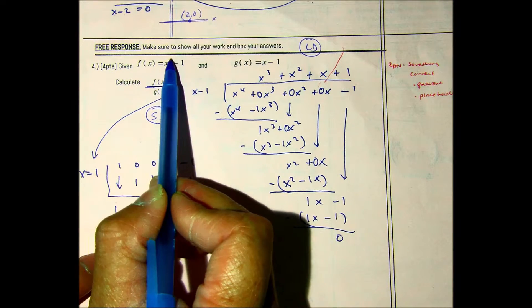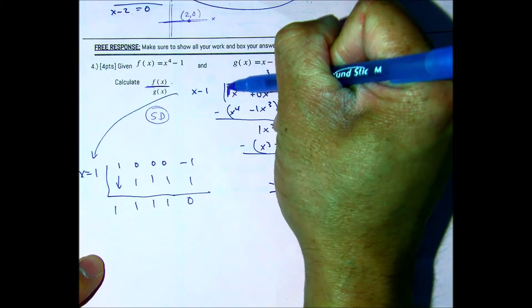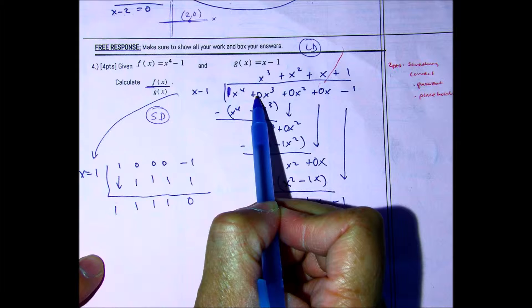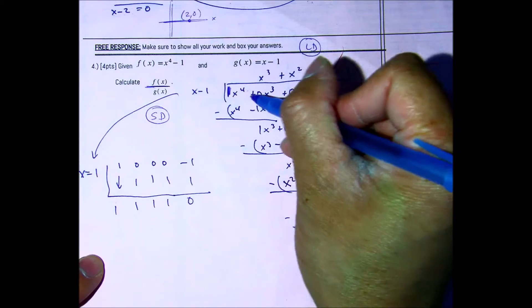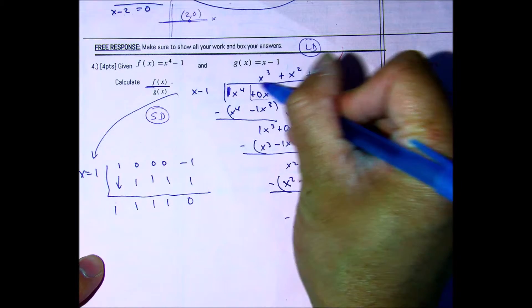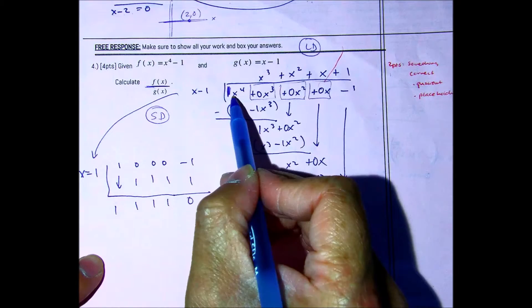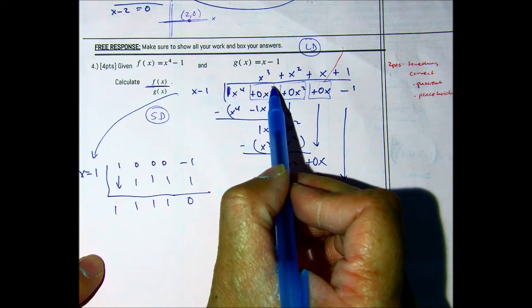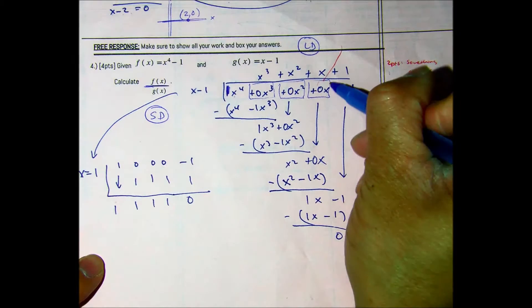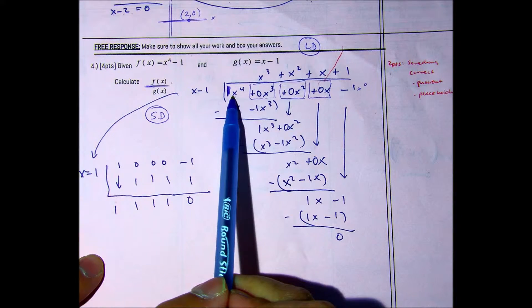Why do you need a placeholder? x to the 4th, you can think of it as 1x to the 4th, 0x to the 3rd, plus 0x squared, plus 0x minus 1. So these 0's here, you have to add. When do you add them? When they're missing. You just kind of go descending or down the order. x to the 4th, x to the 3rd, x to the 2nd, x to the 1st, x to the 0.